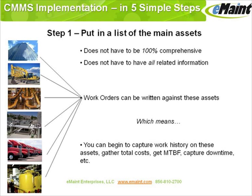The first step, putting in a list of the main assets, is pretty straightforward. It doesn't have to be 100% comprehensive. You don't have to identify every single asset on site before you put it in, and it doesn't have to include every piece of related information — P&IDs, manuals, everything linked from the start. Just getting a list of the main ones is a good start. Once you have that, you can write work orders against these assets, capturing work order history, mean time between failures, and downtime.